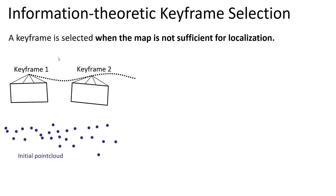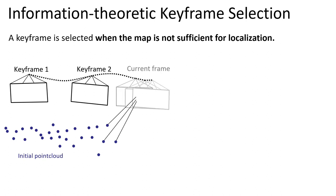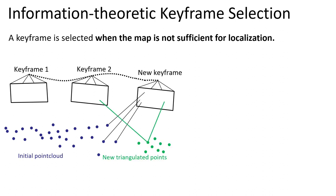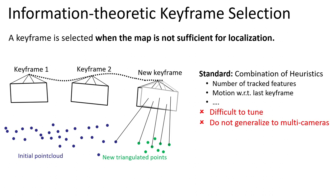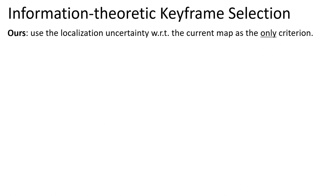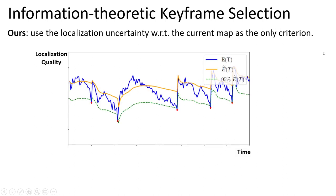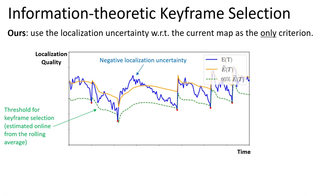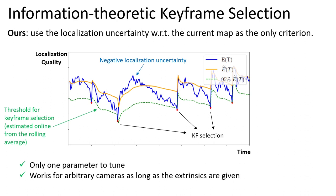In keyframe-based SLAM, a keyframe is selected when the map is not sufficient for tracking, and new landmarks are triangulated at new keyframes. The standard approach uses a combination of heuristics as the keyframe criterion, which is typically not easy to tune and does not generalize to multi-camera setups, since heuristics such as the number of tracked features and camera motion are specific to the setup. Instead, we propose to use the localization uncertainty with respect to the current map as the only criterion. When the localization quality drops below a threshold estimated online, a new keyframe is selected and the localization quality increases. Our method directly characterizes the localization quality and thus does not depend on camera-specific heuristics.